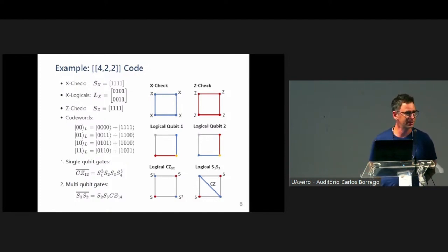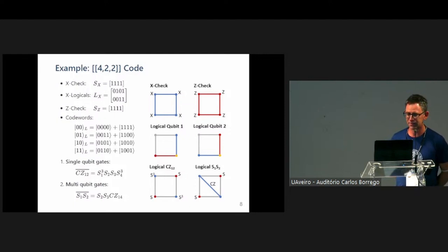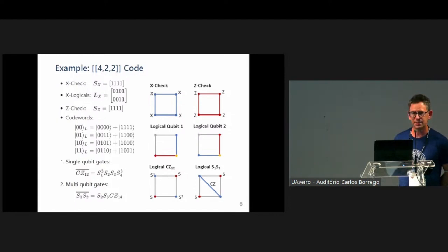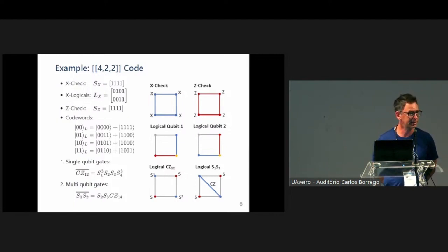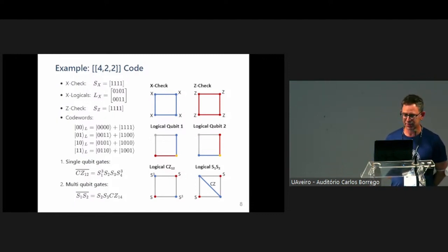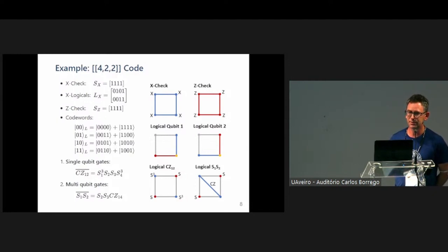The 422 code is quite well-known; the X checks and X logicals look like that, and applying the formula gives four code words, so it encodes two logical qubits. There are two interesting gates to describe. The first gives a logical Control-Z on qubits one and two, given by a series of S and S-cubed operators on each qubit — a logical operator made out of single-qubit phase gates. Applying that operator to the code words, only the logical |11⟩ state gets a phase, so it really does represent a Control-Z. We can also make logical operators out of multi-qubit gates: an example is a logical S1-S2, where we apply S to two physical qubits and a Control-Z to the other two.